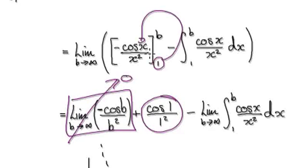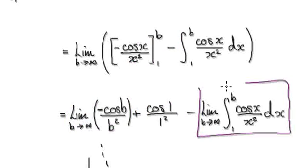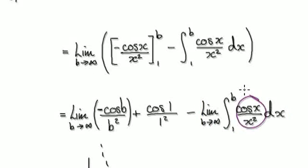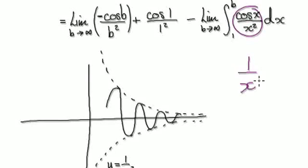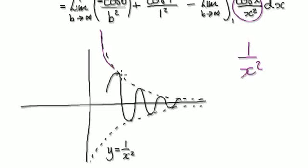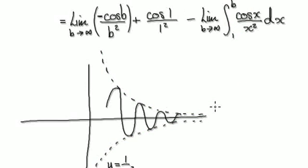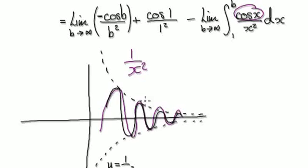And then this is just cos of 1, from putting the lower limit in. Now we need to understand the remaining block. As b heads towards infinity, let's try and draw this graph here. You've got 1 over x squared — draw your 1 over x squared — and the negative version. Then you've got cos of x; it's just going to be a wave trapped inside the 1 over x squared graph.